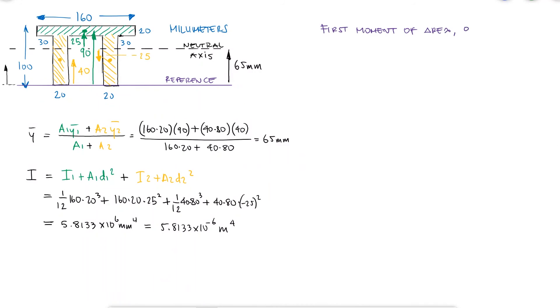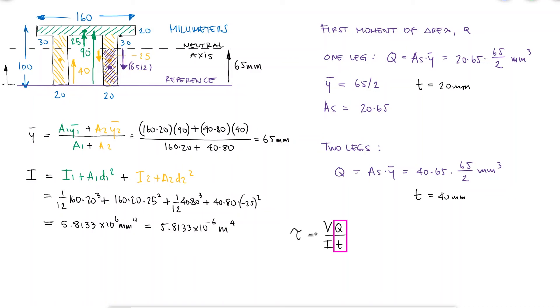We can find Q for one or two legs. The distance from the neutral axis to the centroid of the shaded area would be half of 65, and only the area would double if we were considering two legs. The thickness t would be 20 if considering only one leg and 40 if considering two legs. So the term Q/t is the same whether considering one or two legs, which makes sense since stress is defined as load per unit area.